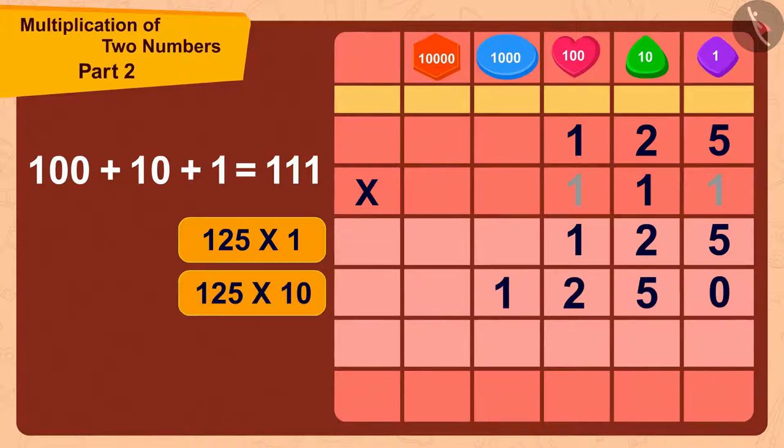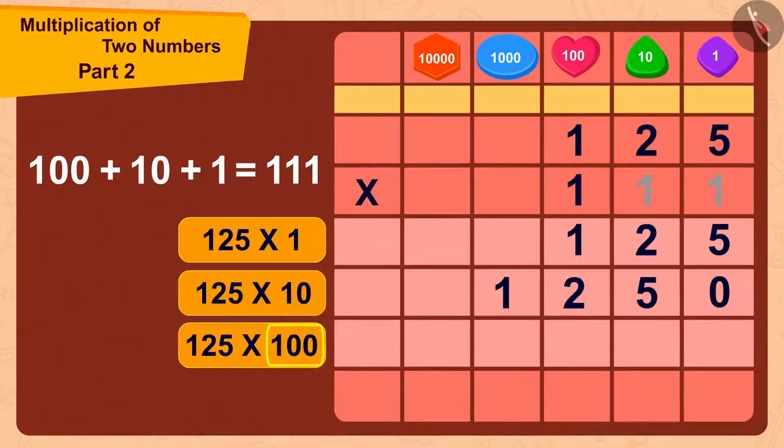Now, we just have to multiply 125 with 100. Because there are two zeros in 100, we will first write two zeros.